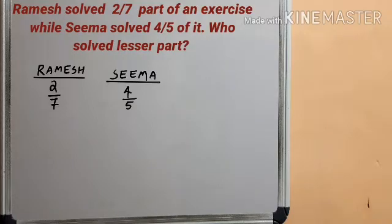Ramesh solved 2/7 part of an exercise while Seema solved 4/5 of it. Who solved lesser part?